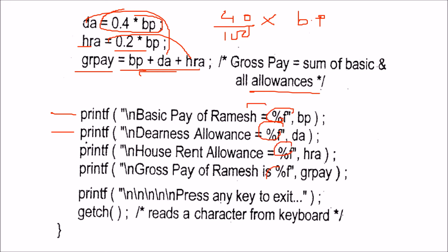You can print each value on a new line using \n. Then you can add a message saying 'press any key to exit' and use getch() to pause before exiting — this is why we included conio.h.